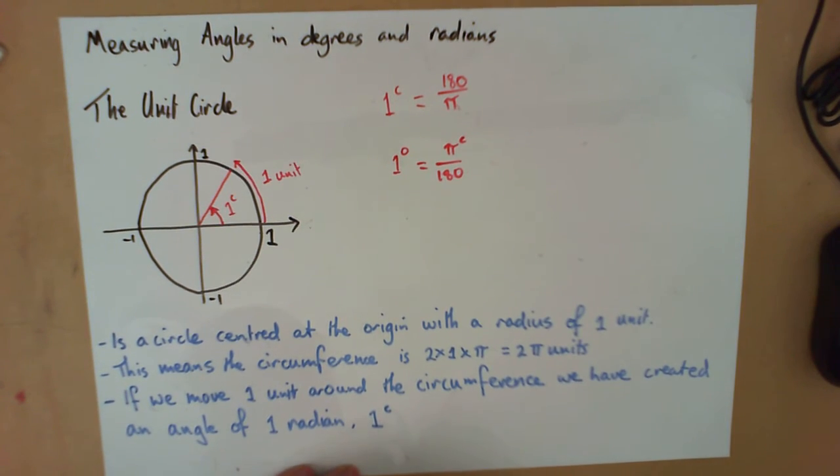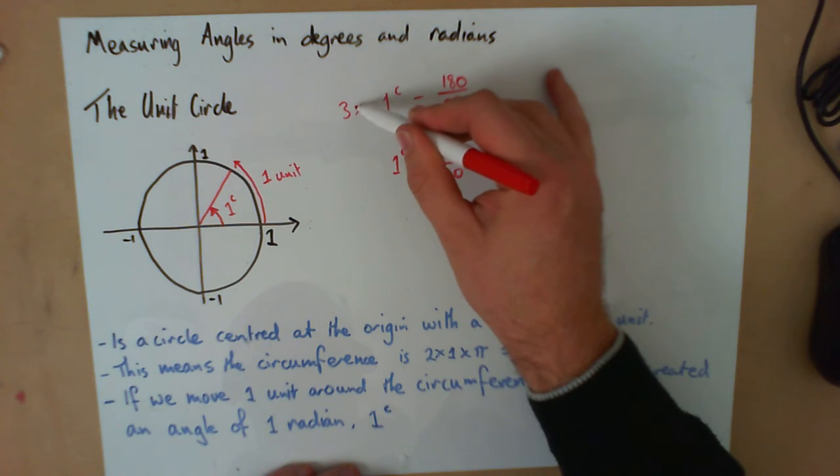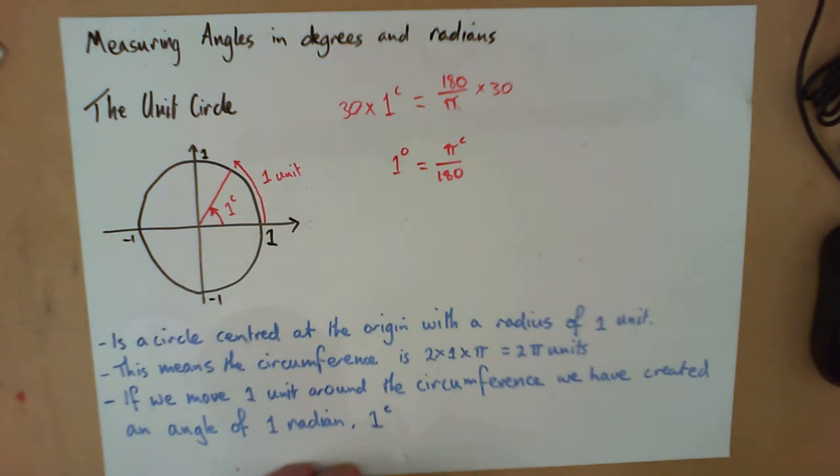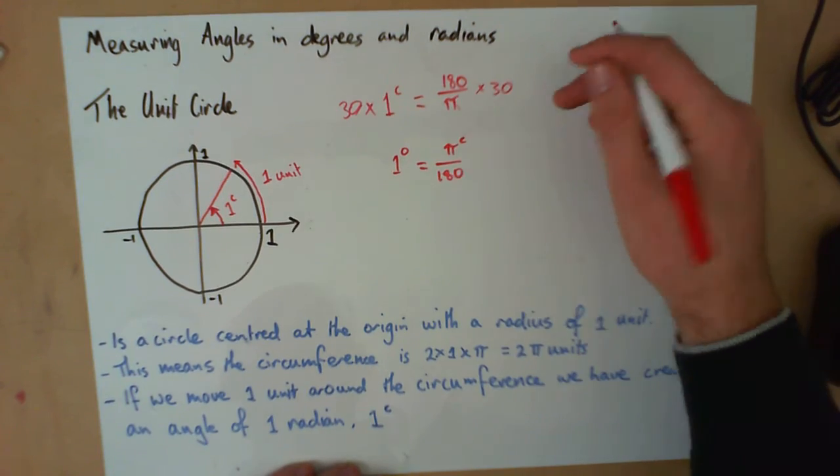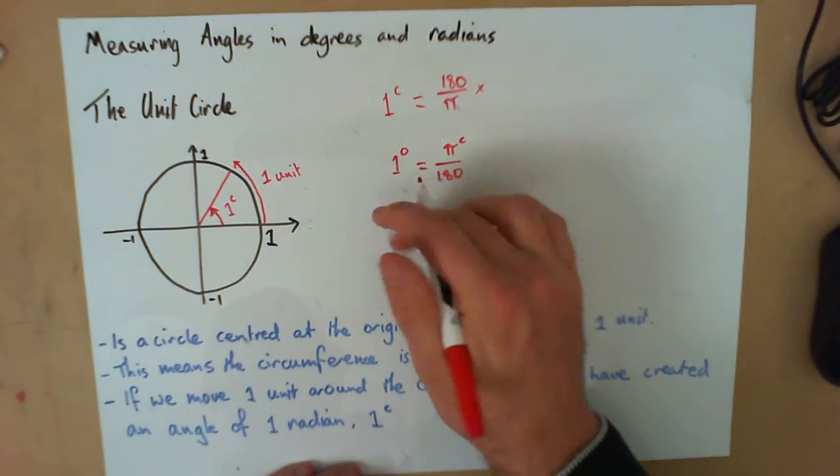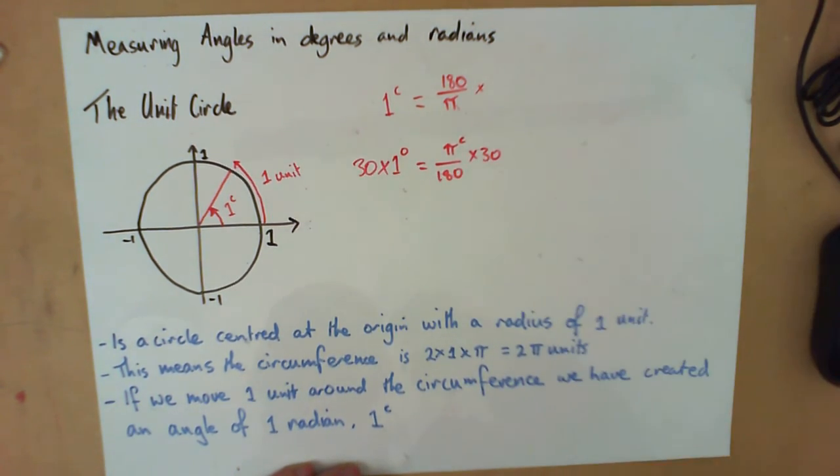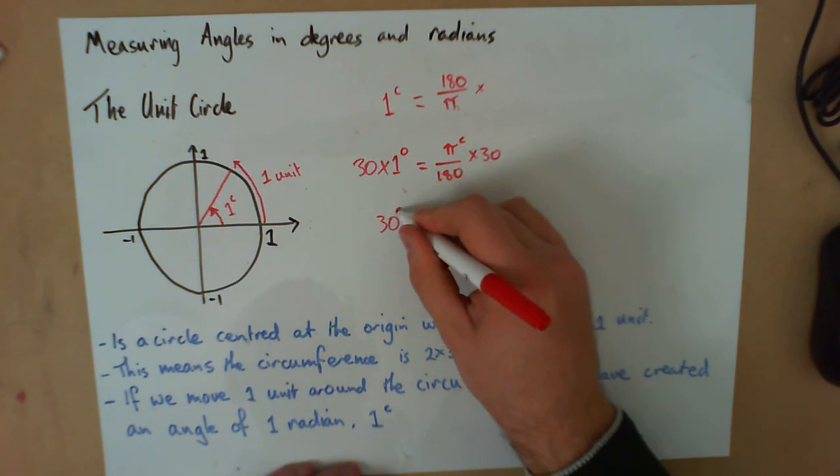So if we need to convert 30 degrees to radians, then we're going to times both sides by 30. We can see that 30 and 180 will cancel out, so 30 degrees equals π/6 radians.